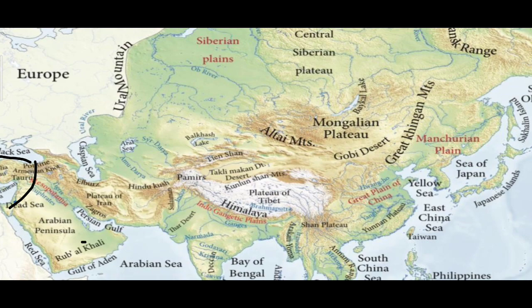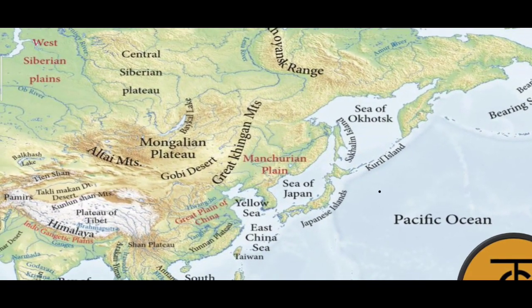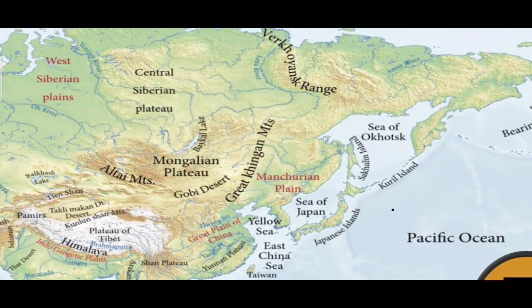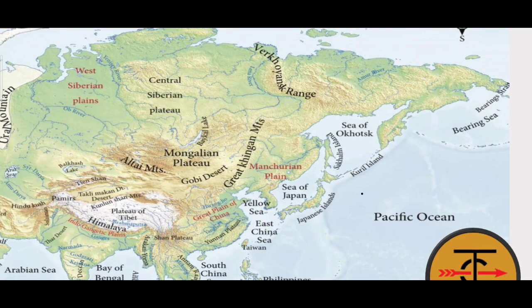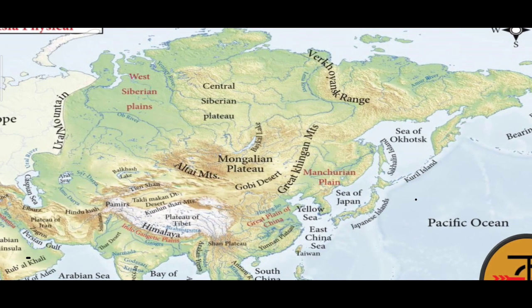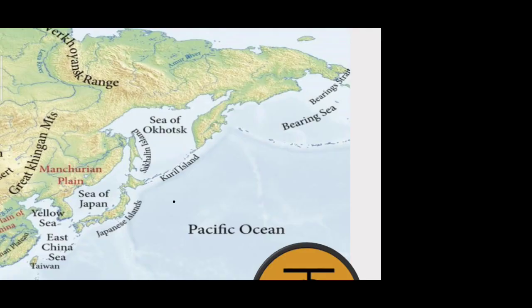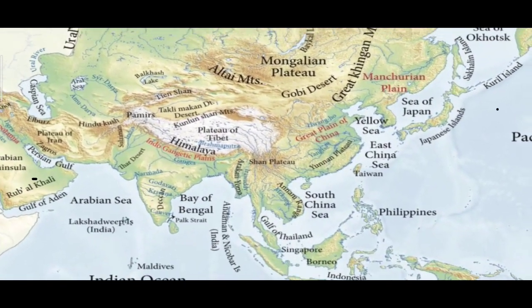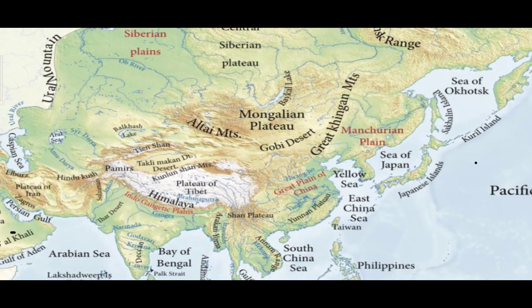The Plateau of Tibet lies between the Kunlun Shan Mountains to the north and the Himalayas to the south. This can be asked in exams — Himalayas below, Kunlun Shan above, Tibet Plateau between them. Also note the Yunnan Plateau located in China — mark it on your map.